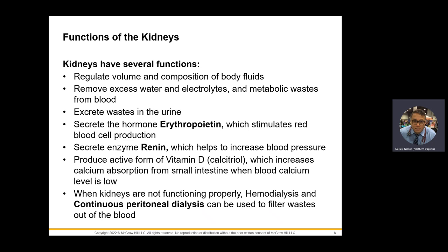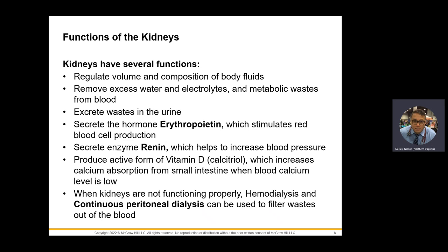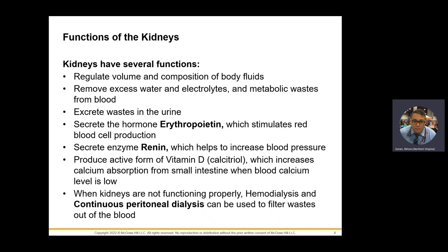The kidney also secretes erythropoietin — which stimulates red blood cell production — and it secretes renin, which deals with blood pressure. It also processes vitamin D. So if you lose your kidney due to something as preventable as diabetes, it's going to mess with your blood pressure, your blood cells, all your waste and electrolytes, and your vitamin D metabolism.